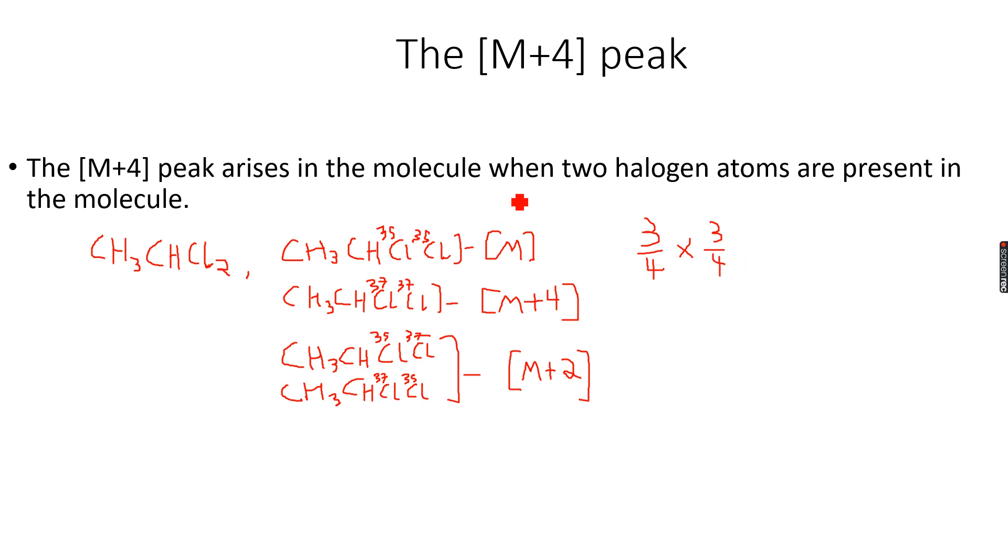Because we have 2 in this, we will have to multiply 3/4 with 3/4, so what we get over here is 9/16. The probability of getting this molecule in one of the fragments.